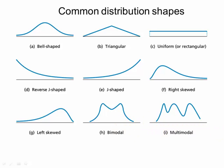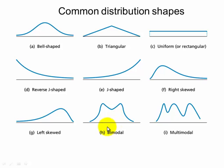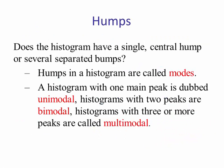The common four types that we're going to discuss are bell shape, uniform, skewed right, and skewed left. But we'll also discuss bimodal and multimodal. Does the histogram have a single central hump or several separated humps?